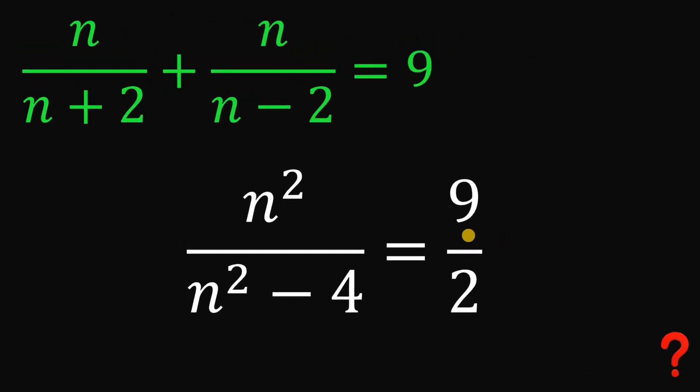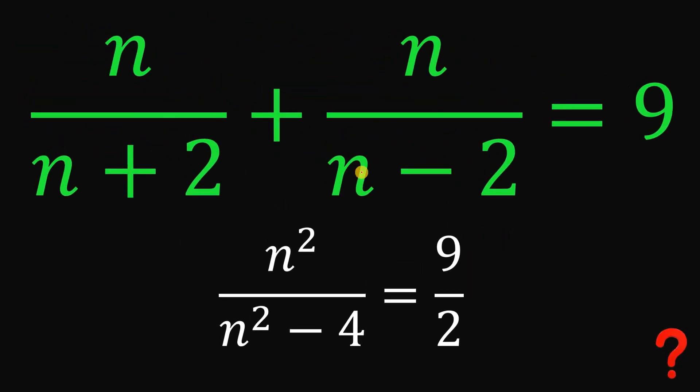So, therefore, our answer to this question, given this equation, n over n plus 2 plus n over n minus 2 equals 9, then the numerical value of n squared over n squared minus 4 must be equal to 9 over 2.